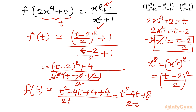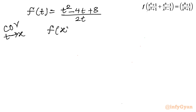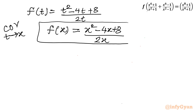Now we change our variable to write the answer in x. So replacing t with x: f(x) = (x²-4x+8)/(2x). This is our ultimate answer — a rational functional equation. Note that x cannot be equal to 0 for the given function.